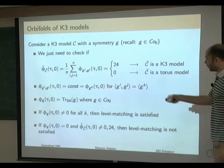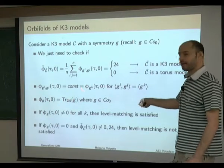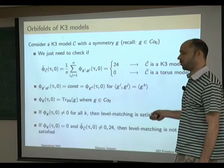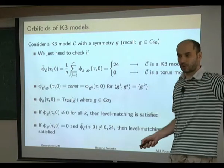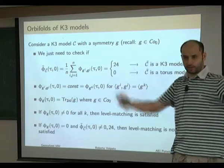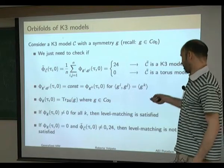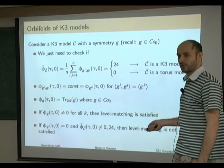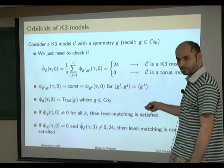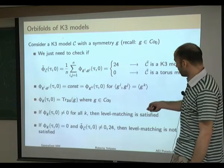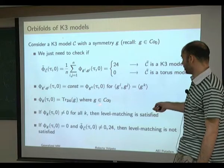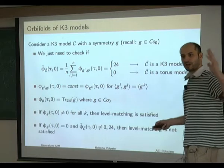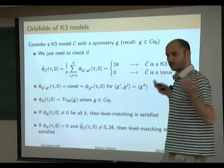The constant is automatically modular-invariant and must equal the elliptic genus of G^k evaluated at z=0. This we can compute: it is just the trace of the element G over the 24-dimensional representation of the Ramond-Ramond ground states, which by the construction of our theorem is simply the 24-dimensional representation of the Conway group. So we can compute these quantities just knowing the conjugacy class of G inside the Conway group.